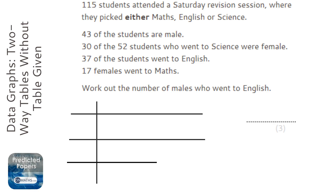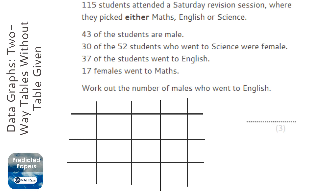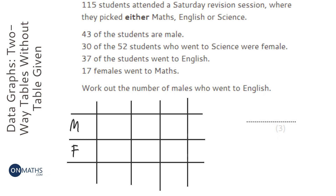We're going to have male, female, and total as our columns. We're going to have maths, English, and science as our rows, and then a total at the end.